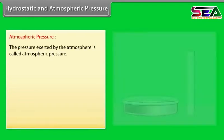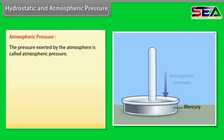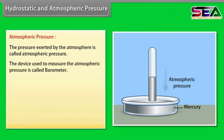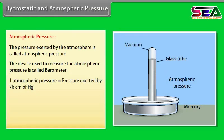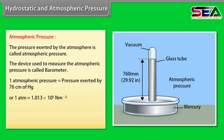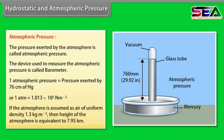Atmospheric pressure: The pressure exerted by the atmosphere is called atmospheric pressure. The device used to measure it is called a barometer. One atmospheric pressure equals the pressure exerted by 76 cm of mercury, or 1.013 × 10⁵ N/m². If the atmosphere is assumed as air of uniform density 1.3 kg/m³, then the height of the atmosphere is equivalent to 7.95 km.